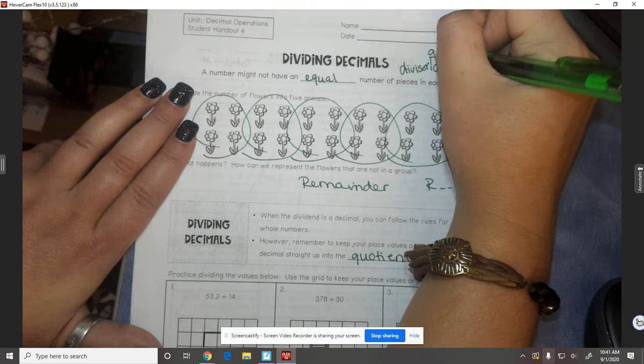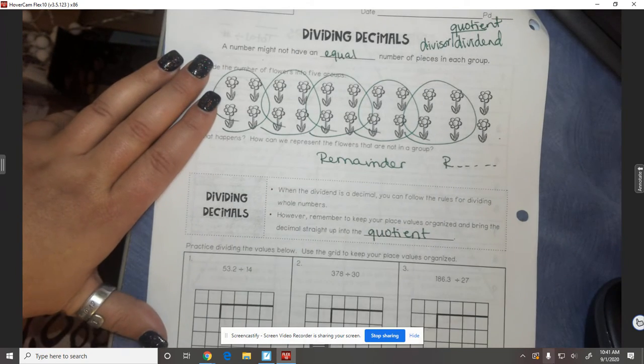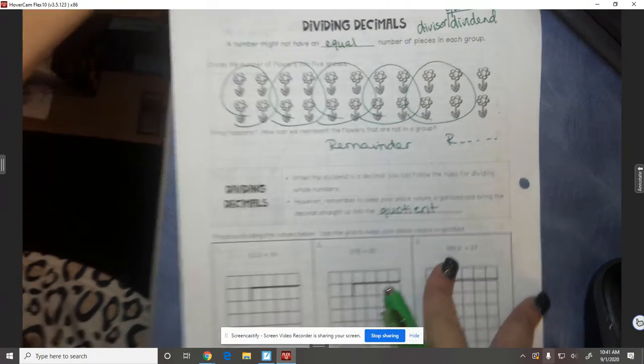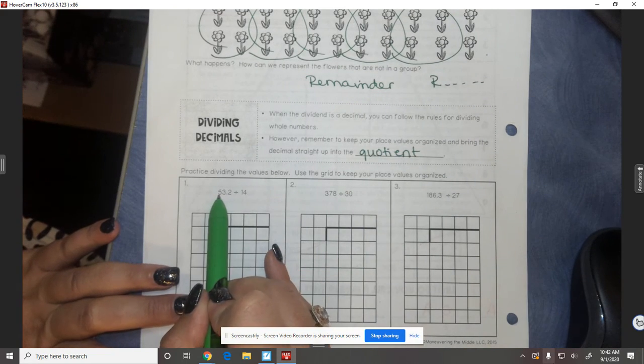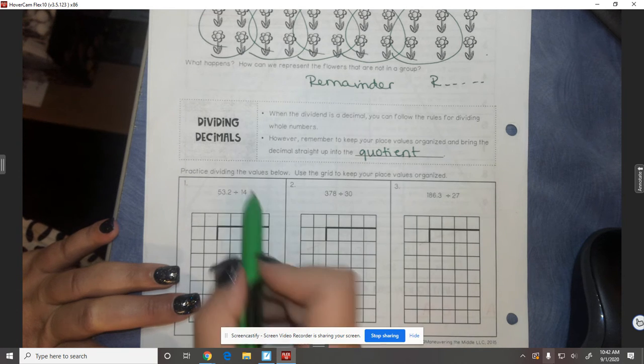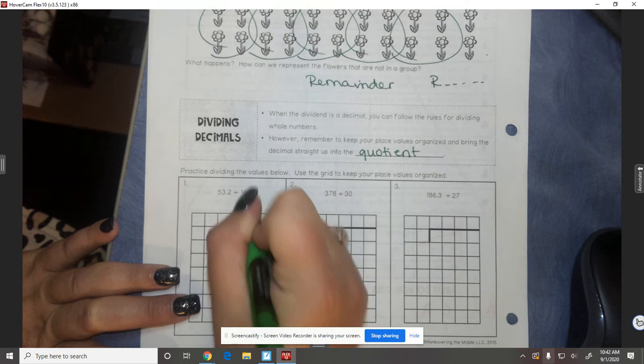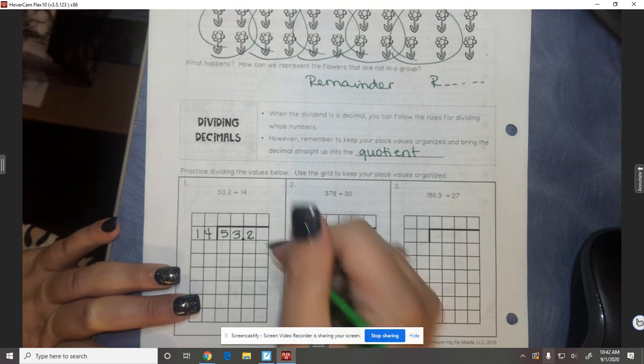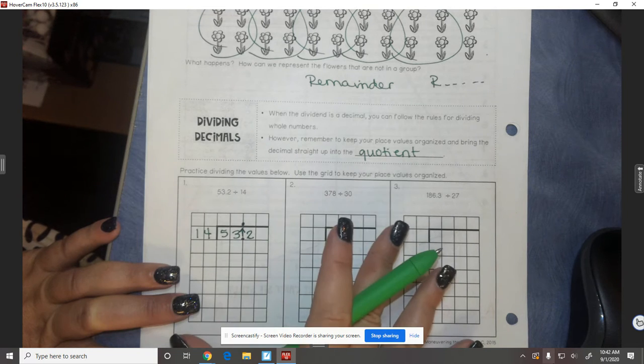So the quotient is up top. So if I put up here quotient, that's the answer, right? The quotient goes up top. So basically same steps, we just have to remember to bring the decimal up and that's what we're going to do. So let's look right here. We have 53 and 2 tenths divided by 14. 53 and 2 tenths is going to go under the house. I'm going to divide it by 14. Since I have a decimal under the house, the very first thing I need to do is bring that decimal up. Now everything is normal.